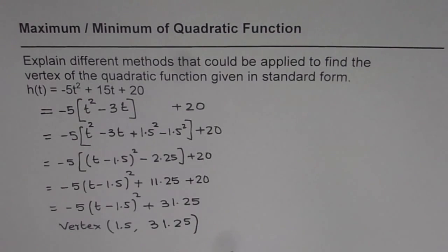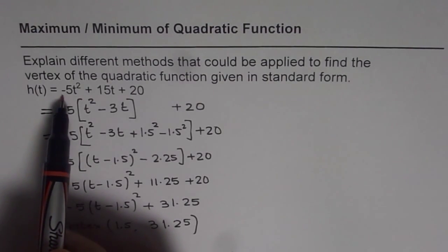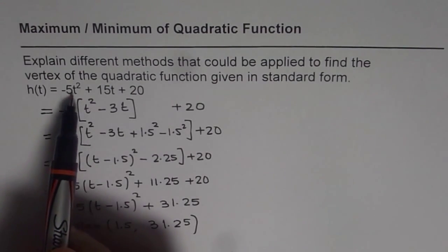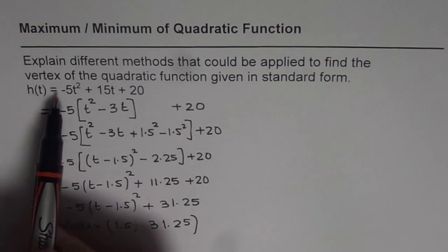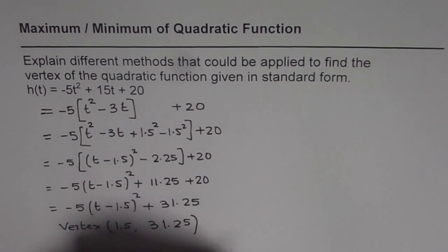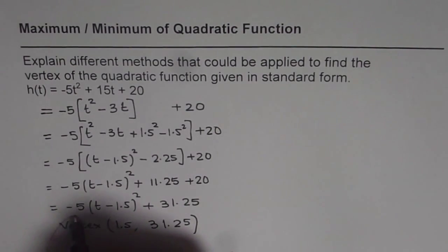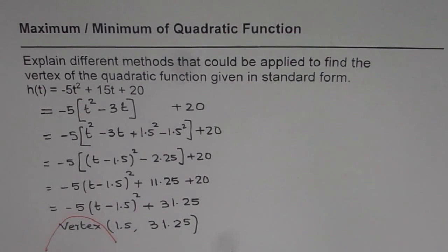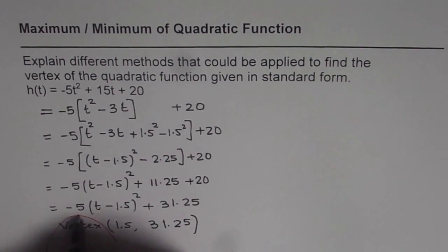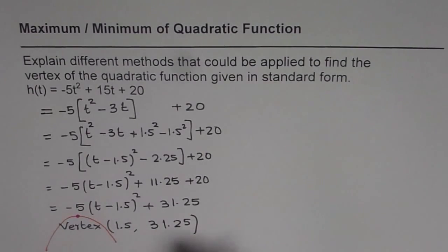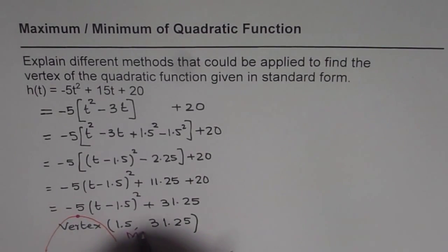Now we need to decide whether it is a maximum or a minimum. That is done by the leading coefficient -5. So the coefficient of t² is negative. It means it is a parabola which opened downwards. And therefore the vertex represents a maximum.